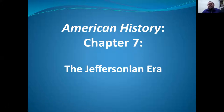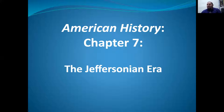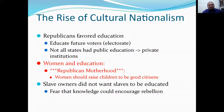Chapter 7, the Jeffersonian Era, is obviously symbolized by the election of Thomas Jefferson and his Democrat-Republicans, known as Jeffersonians, who continued his policies as future presidents.